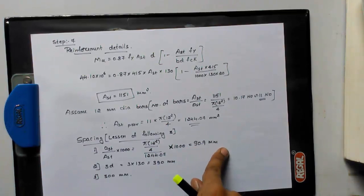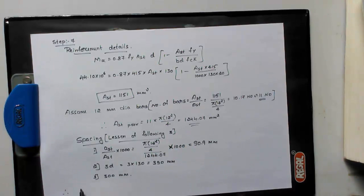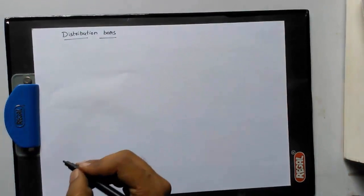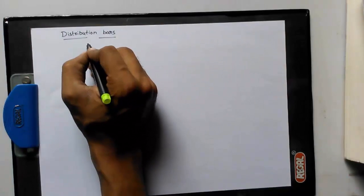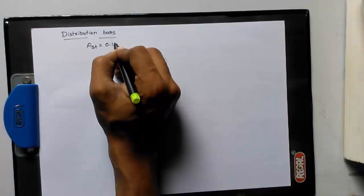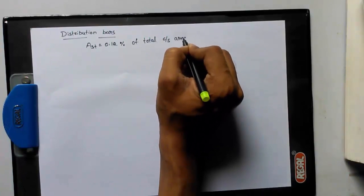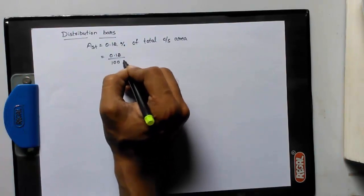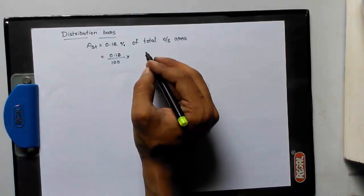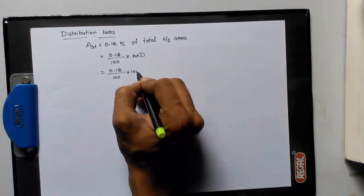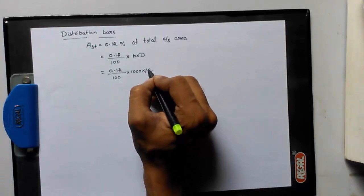We need to round up for the least one. Therefore, provide 11 number bars at 90 mm center to center. So distribution bars will be the least is equal to 0.12 percent of total cross-sectional area. 0.12 percent is nothing but 0.12/100.